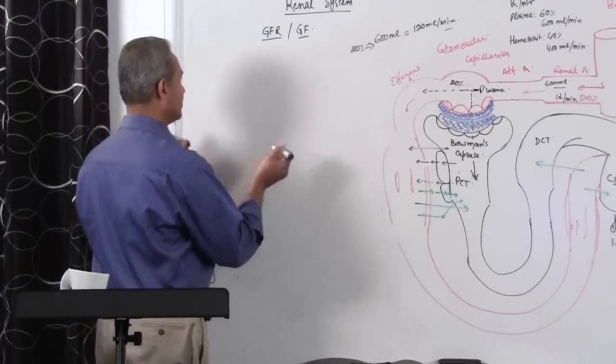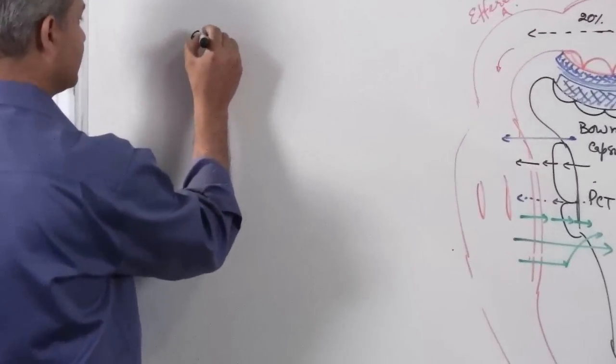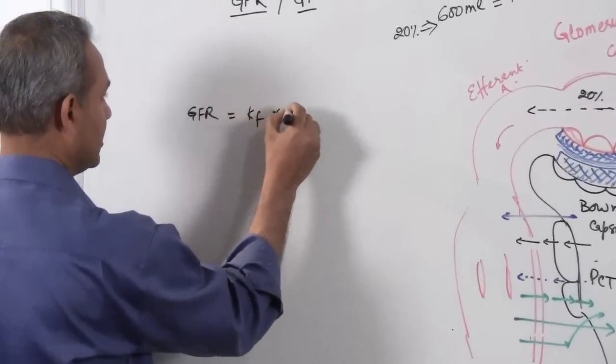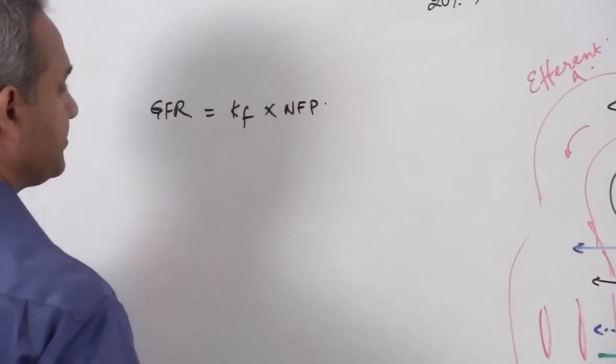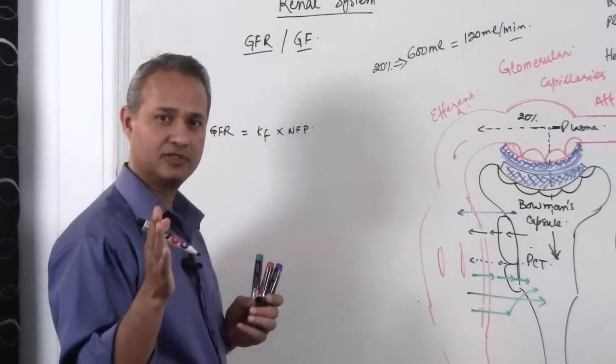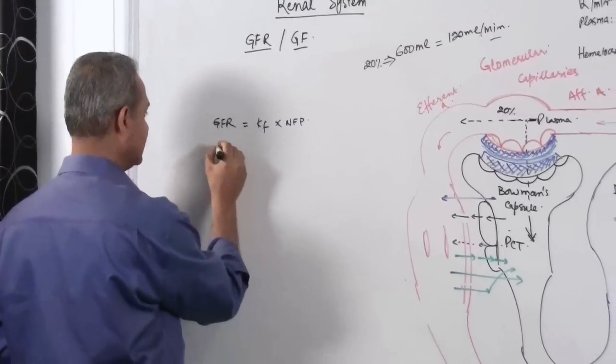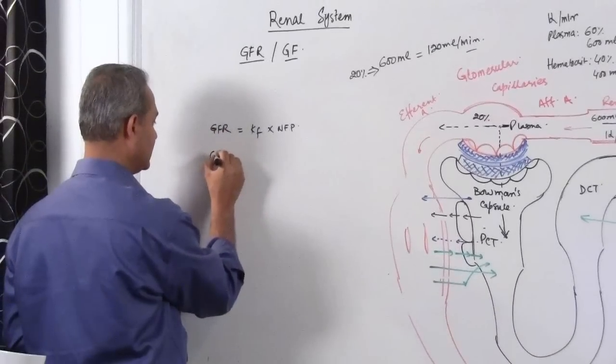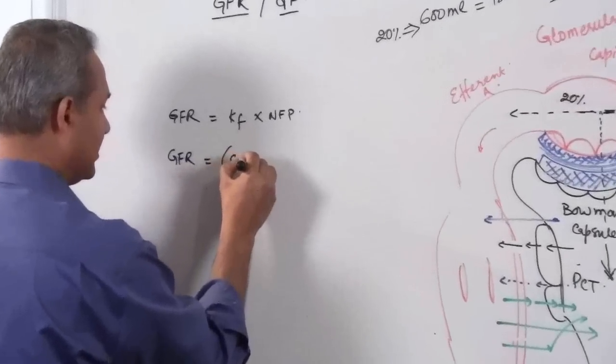The formula for GFR equals filtration coefficient multiplied by net filtration pressure. There are multiple formulas. I hope you also know that this same formula can also be written as equals surface area...